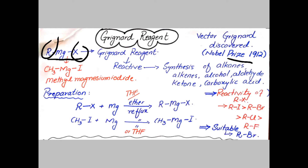X is halogen — halogen can be chlorine, bromine, iodine, fluorine, etc. So if the halogen is iodine and R is methyl, the compound is methyl magnesium iodide. Victor Grignard first prepared methyl magnesium iodide. It is a very reactive compound used for the synthesis of different types of organic compounds like alkanes, alkenes, alcohols, aldehydes, ketones, carboxylic acid, etc.